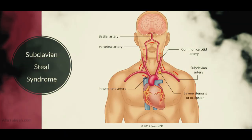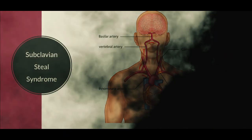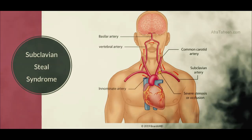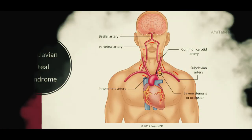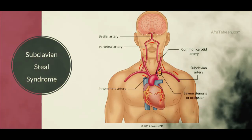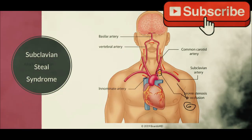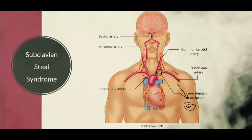We have here a schematic demonstrating subclavian steal syndrome and its underlying pathophysiology. As we can see on this patient's left-hand side, there is a stenosis involving the proximal subclavian artery. Therefore, if this patient were to exert their arm on this side, there's going to be a lack of blood flow sufficient to keep up with this exertion and increase in activity, thus resulting in pain or claudication.